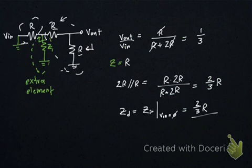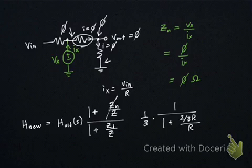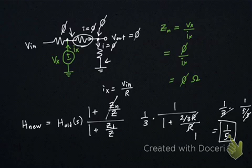So it's just 1 third times 1 over 1 plus 2 thirds R over R. Because Z, remember, is our extra element that we're adding. These R's cancel and we get 1 third times 1 over 5 thirds. The 3's cancel and we're just left with 1 fifth. And so that's our new transfer function.